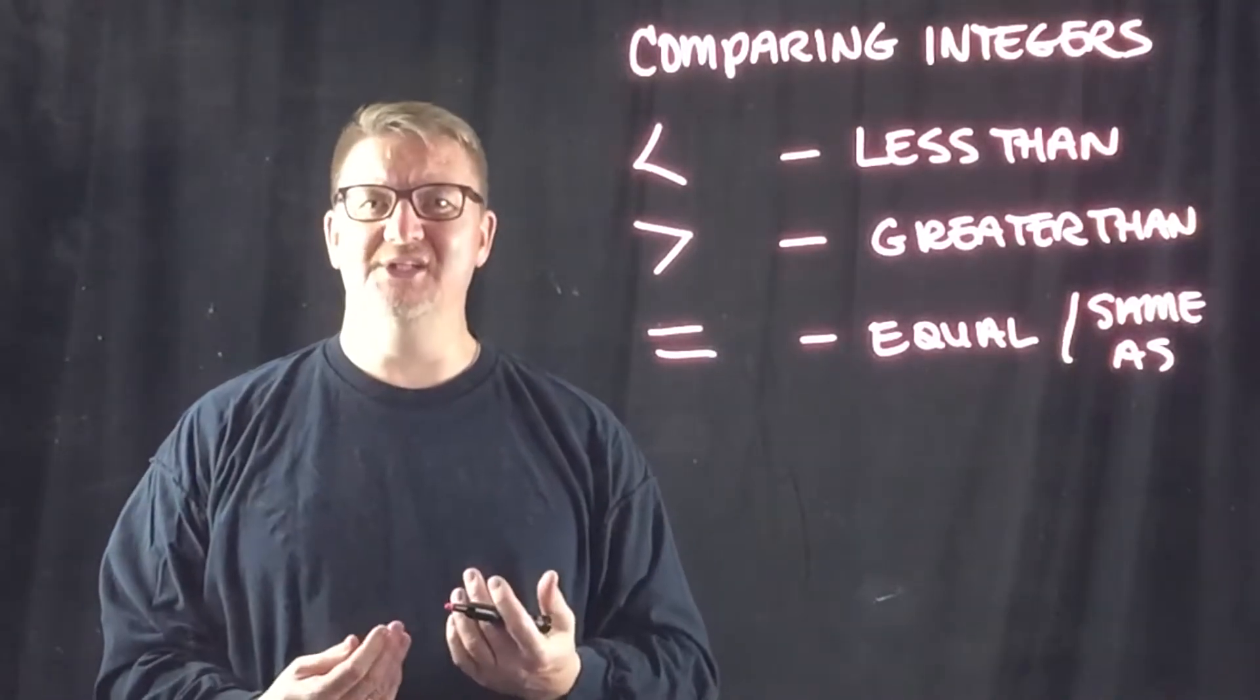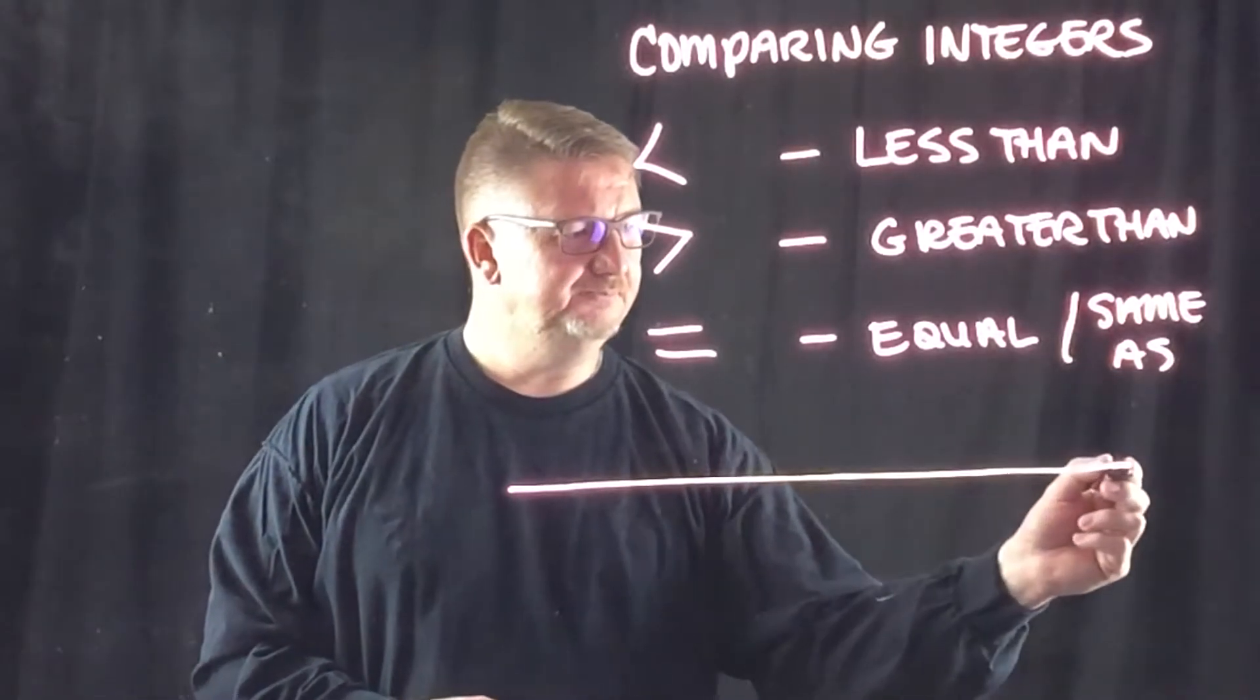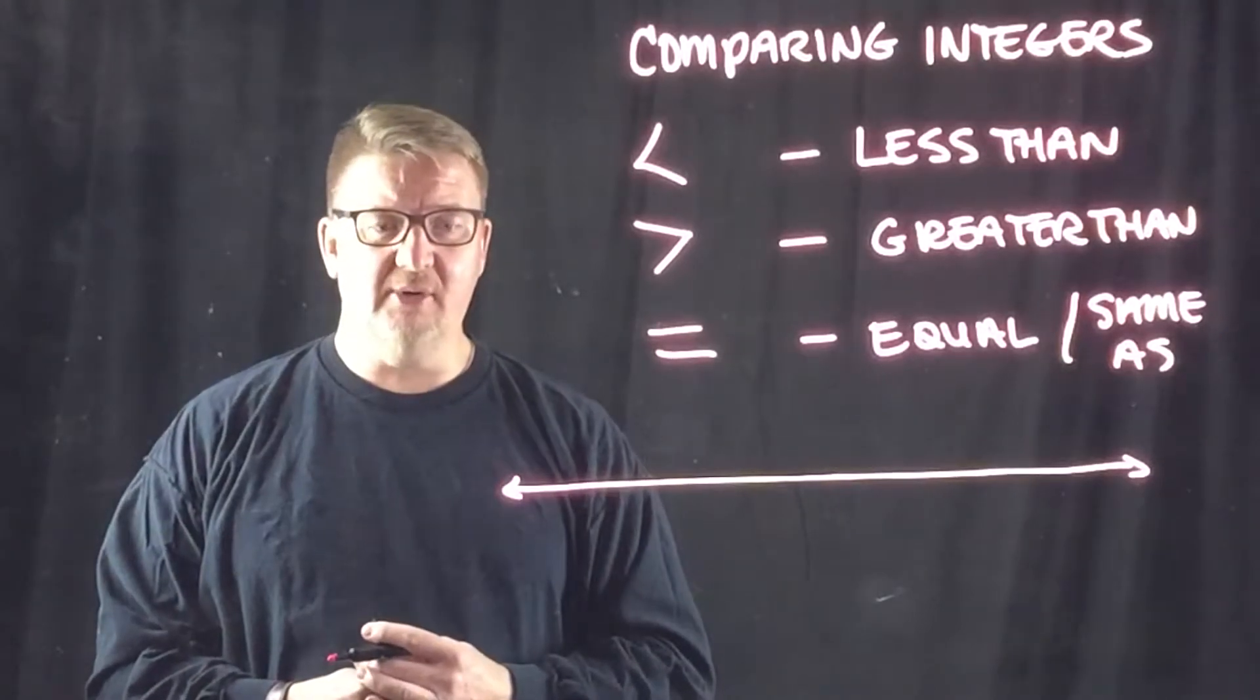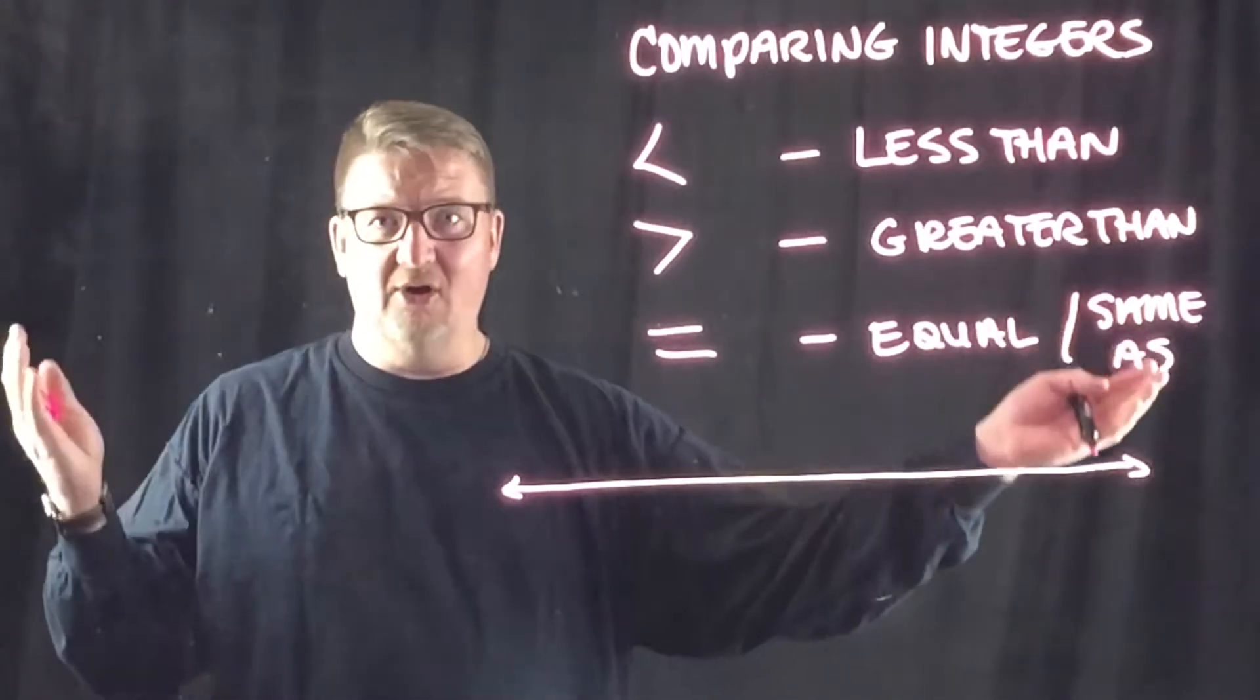When you're comparing integers, something that you can do is use a number line to make the comparisons. So you draw your number line, we put arrows on the end of our number line to indicate that it continues in either direction on to infinity.